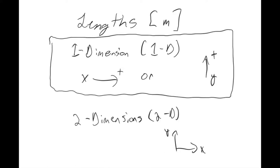By convention, we usually say that as you go to the right, your x value increases, and in the y direction, as you go up, your y value increases. But those are both arbitrary. When you start your problem, you can pick whichever direction you want to be positive. There will be some instances where it makes more sense to say that as you go down, your y value increases — maybe it makes the math easier. So you're free to define your coordinate system however you'd like, you just have to make sure you let everyone know what you pick.